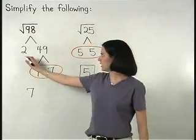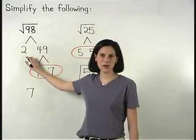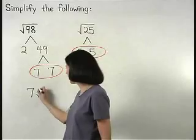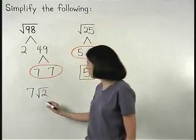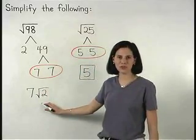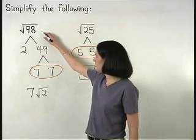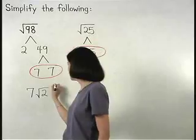Notice that we have a 2 in our factor tree that doesn't pair up. This means that a 2 stays inside the radical, which gives us 7 times the square root of 2. So the square root of 98 simplifies to 7 root 2.